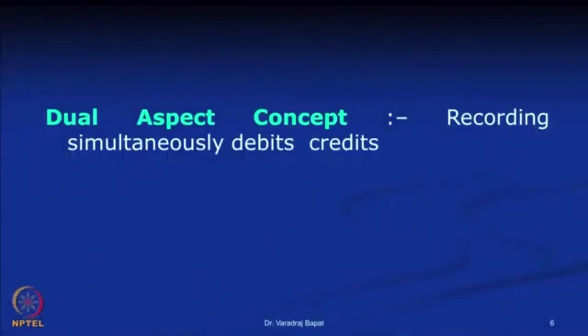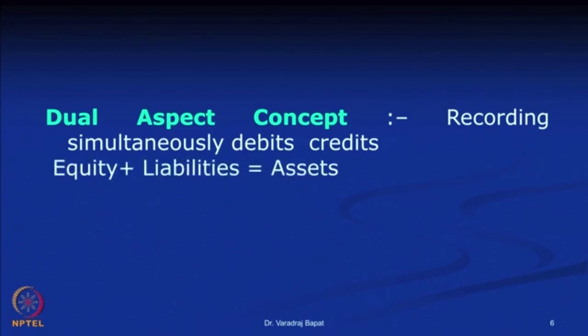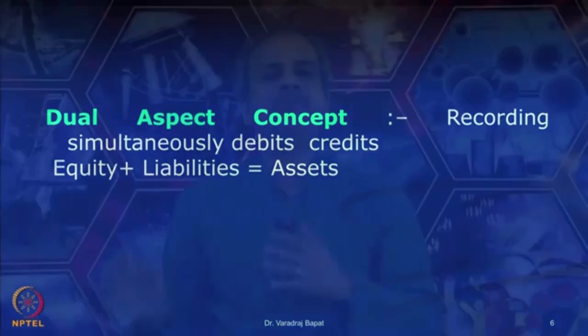Next is the dual aspect concept. For every transaction there are two effects, sometimes called debit or credit. Because of these two effects, the balance sheet always tallies. We have already seen the balance sheet equation: equities plus liabilities equals assets.